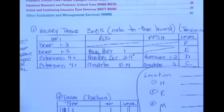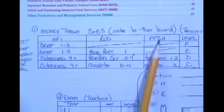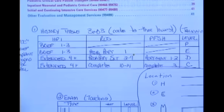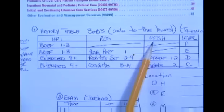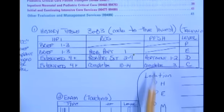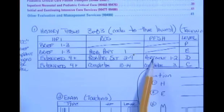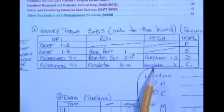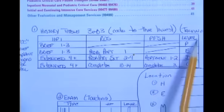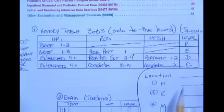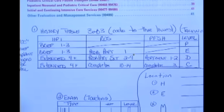The third piece of history is the past, family, and social history — PFSH. There are three distinct pieces: past history, family history, and social history. If you see documentation for one or two of those, it's considered a pertinent PFSH; all three is considered complete. Then here are the four possible levels we want to fill in on our H line: problem focused, expanded problem focused, detailed, or comprehensive.